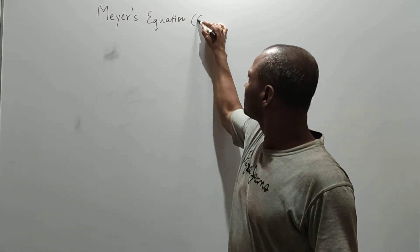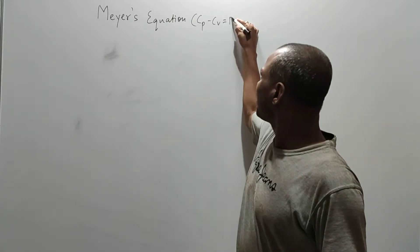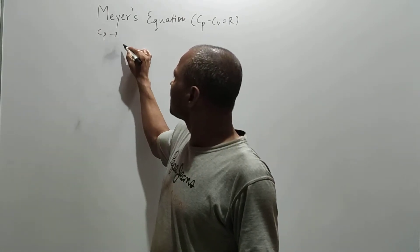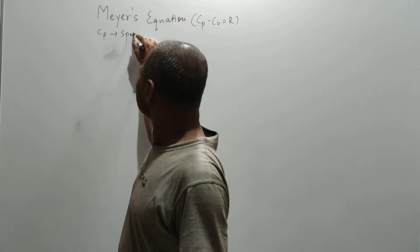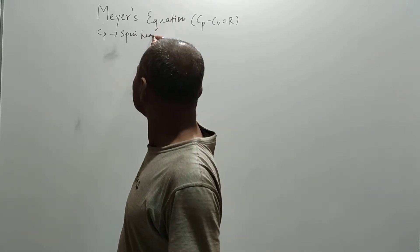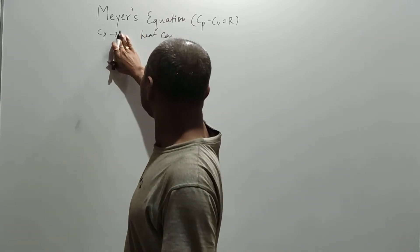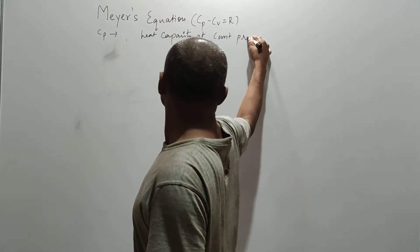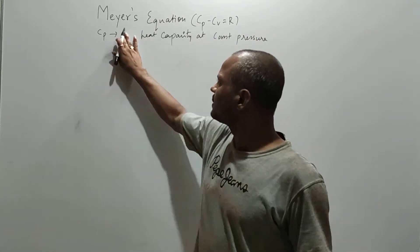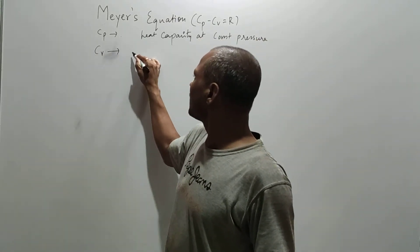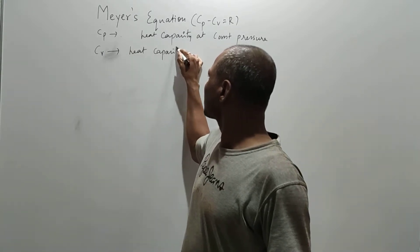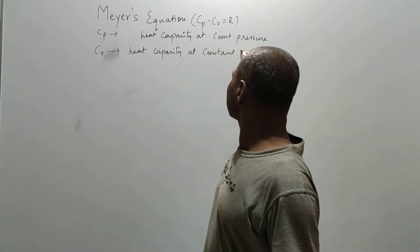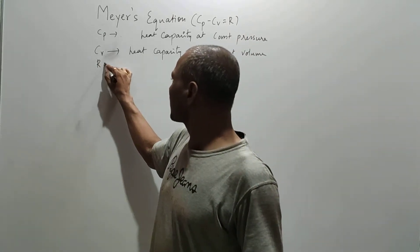So it is Cp minus Cv equals R, where R is gas constant. Cp here is the specific heat capacity, heat capacity at constant pressure. And Cv is the heat capacity at constant volume. And where R is gas constant.